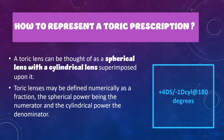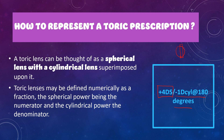So how do you actually represent a toric prescription? A toric prescription is usually your sphero-cylindrical prescription. A toric lens is represented as a sphero-cylindrical prescription — it is thought of as a spherical lens superimposed on a cylindrical lens. Toric lenses may be defined numerically as a fraction, where the numerator is the spherical lens and the denominator is the cylindrical lens.